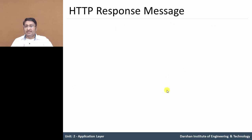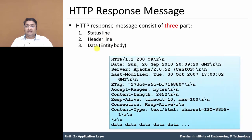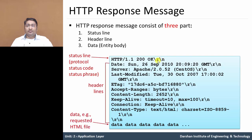Now, the second type of HTTP message is the HTTP response message. The HTTP response message consists of three parts: first part is the status line, second is the header line, and the last one is data, or we can say the message body. In this response message, the first one is the status line, and carriage return and line feed characters — slash R and slash N — appear at the end of each message line.